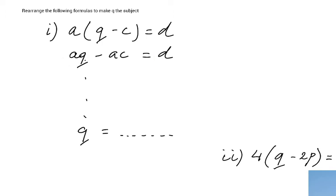Then my second step would be - some of you say start moving, but you're not actually moving - but I'm going to isolate this term with the q in it. So aq equals d plus ac. Do you understand that step? To get rid of the minus ac, I plus it by ac, but then I have to plus the right side by ac as well, and therefore I have this plus ac term here now.